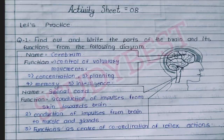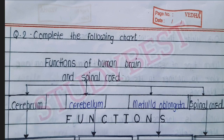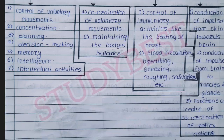The first question is done. Now the second question: complete the following chart. We need to complete the chart on functions of the human brain and spinal cord. There are four types: Cerebrum, Cerebellum, Medulla Oblongata, and Spinal Cord. The functions of Cerebrum are: control of voluntary movements, concentration, planning, decision making, memory, intelligence, and intellectual activities.